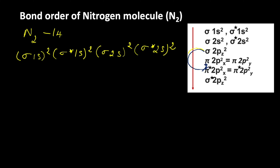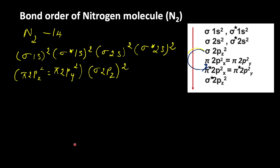So after filling pi 2px and pi 2py, only then do electrons enter into sigma 2pz. The electrons enter into pi 2px² and pi 2py² because their energies are the same, then into sigma 2pz². Counting the electrons: 2, 4, 6, 8, 10, 12, 14 — so 14 electrons are present.